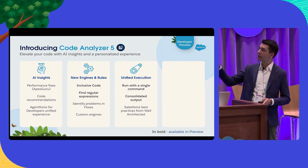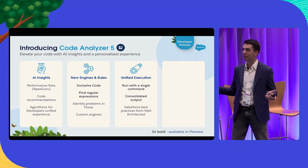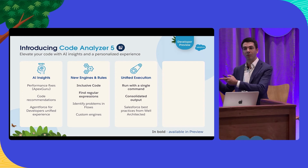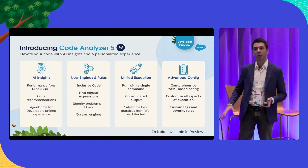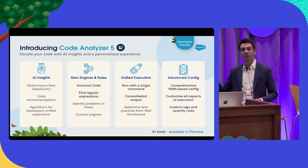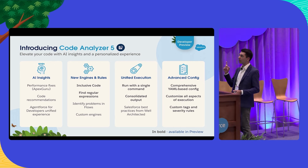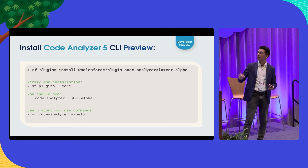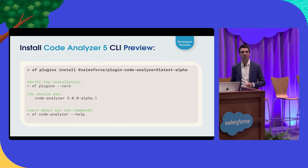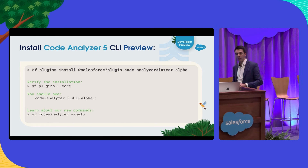We're going to add an engine to scan flows for problems, and the ability for you to bring in your own engines and plug them into CodeAnalyzer 5 and therefore into your entire developer experience. There's a single command to run all of this — one command that scans your entire code base and gives you a consolidated output across all problems found. If there are problems, you can also get enablement resources on how to avoid them, thanks to our integration with well-architected. Following our principles of progressively powerful, we're making CodeAnalyzer 5 much more configurable — you can organize rules with custom tags, custom severity levels, and add your own rules using a single YAML-based file. Everything in bold you can test today using a single command in the terminal to install CodeAnalyzer 5 CLI preview, which runs alongside the existing version without problems since these are entirely new commands.